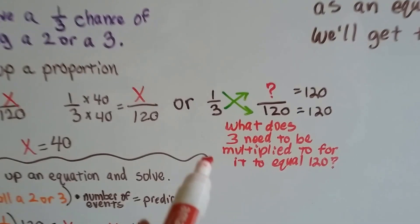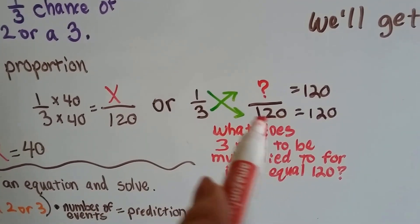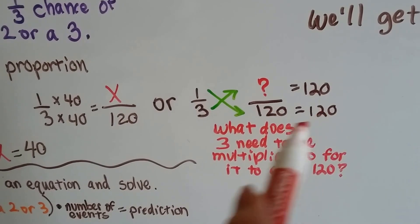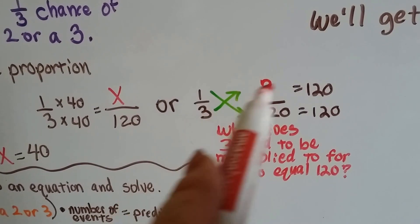The other way you could have done it is we could have just said 1 and cross multiply times 120 is 120. So 3 times what equals 120? Same thing.